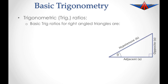Let's have a look at the trig ratios. The basic trig ratios for right angle triangles: where we are given the angle, the side opposite that angle is called the opposite side. The long side opposite the right angle is called the hypotenuse, and the side next to the angle is called the adjacent side.